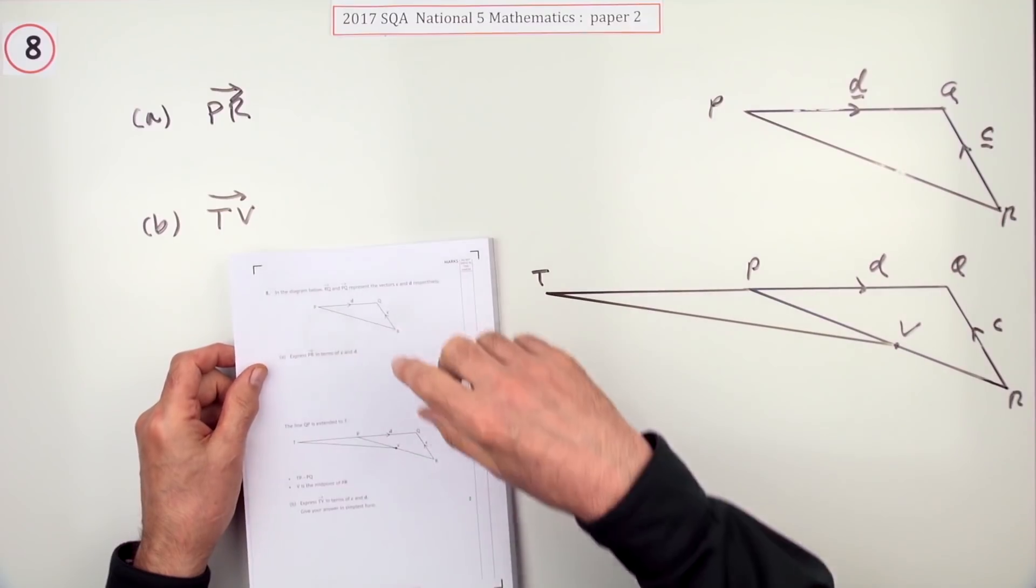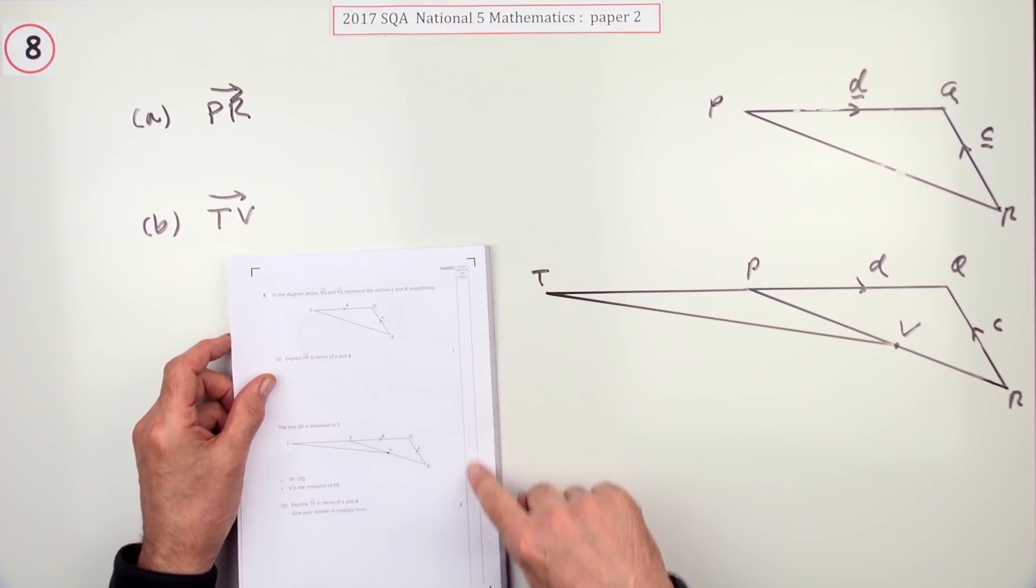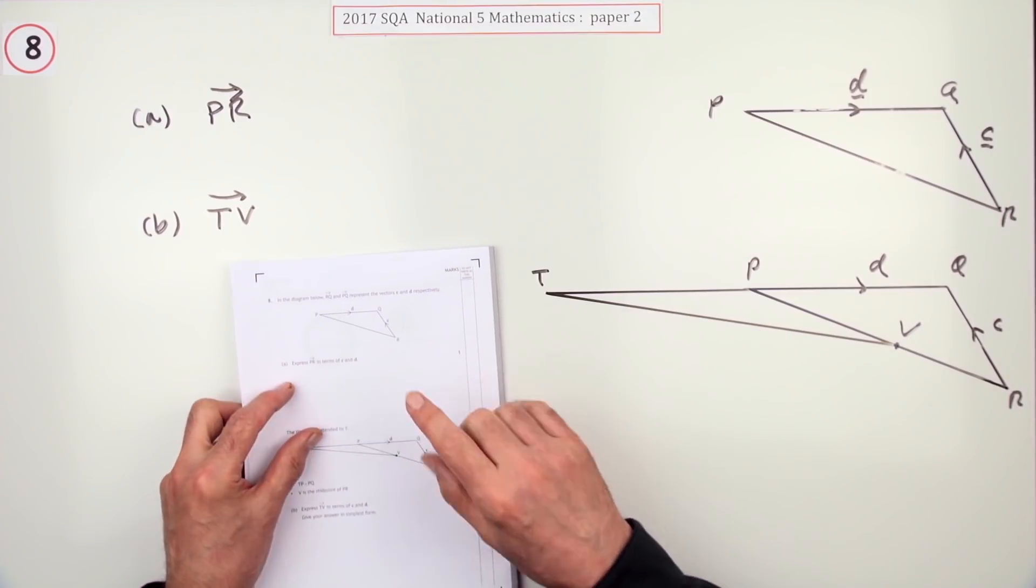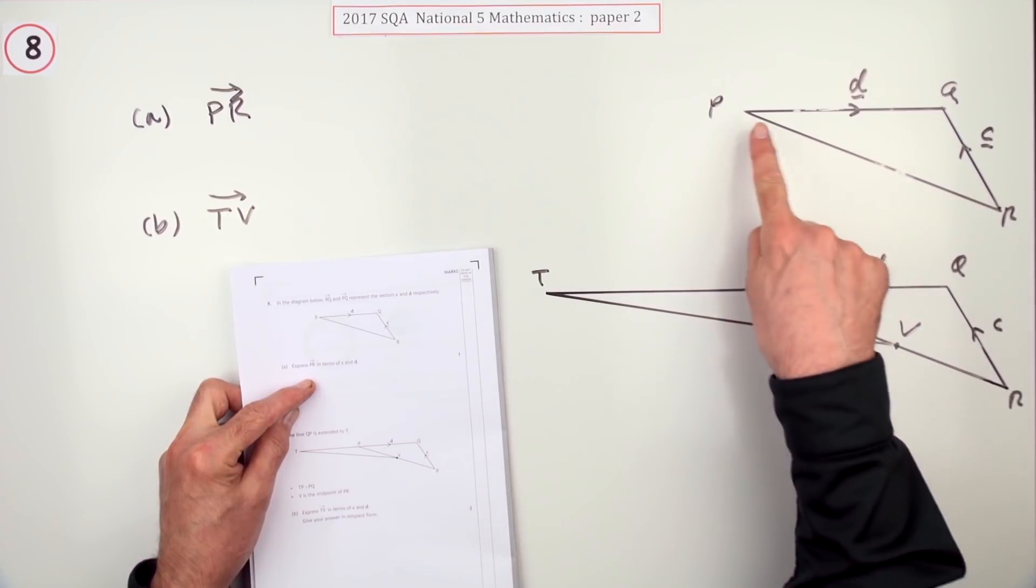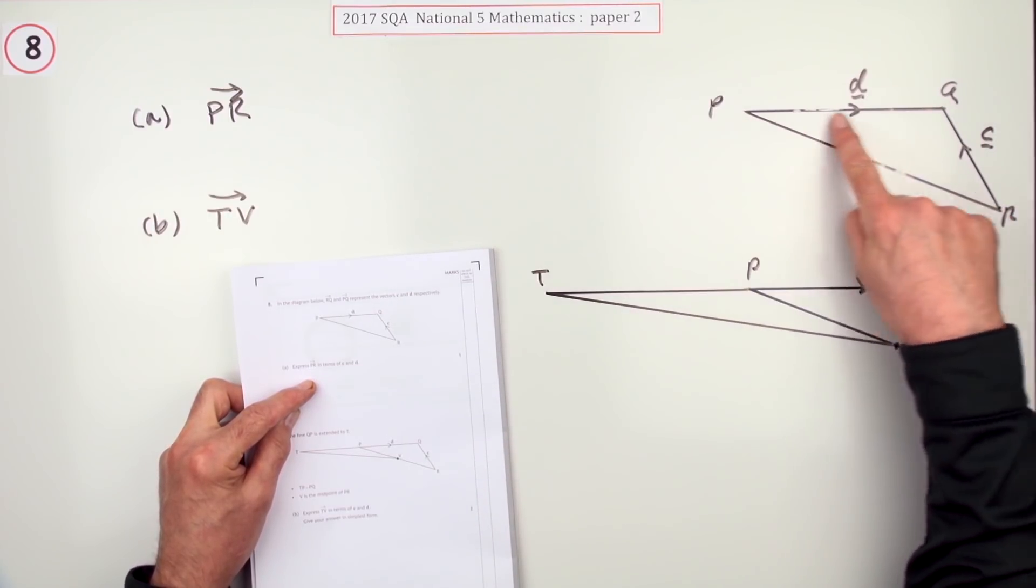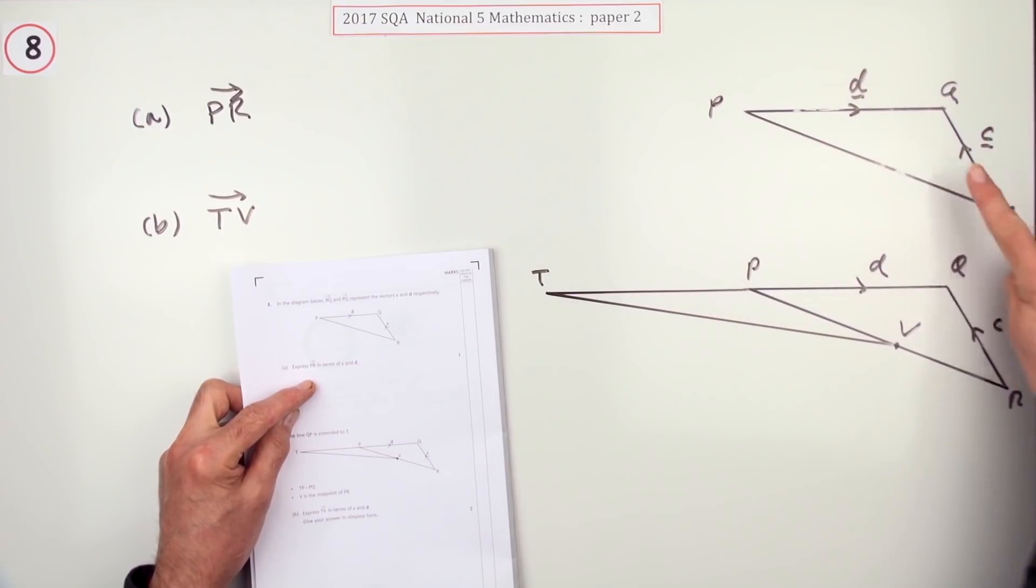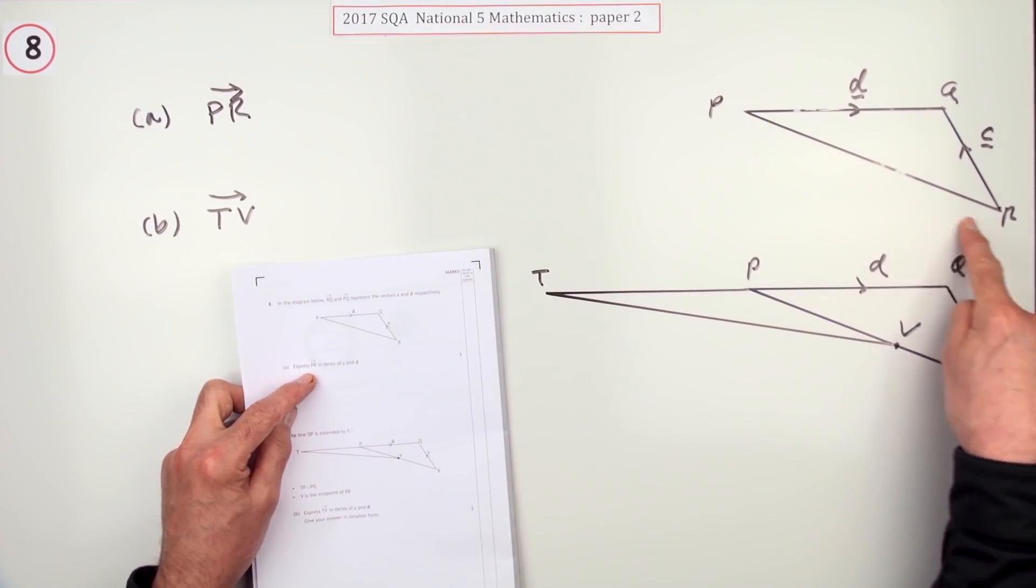Number eight from paper two of the 2017 National Five vectors question, three marks. There's a triangle here and it shows vector d is heading in this direction for that amount and vector c is heading up this way for that amount, and it says express PR.